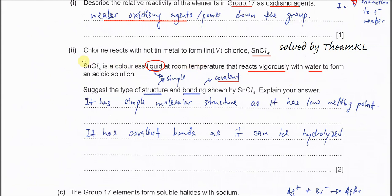It undergoes hydrolysis with the water. From this information, we know that it has a simple structure and the bonding is covalent. It has a simple molecular structure because the melting point is low. It has covalent bond because it can be hydrolyzed, it can react with water.